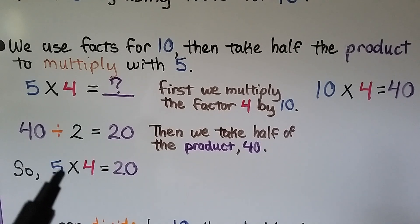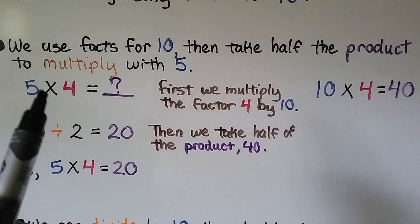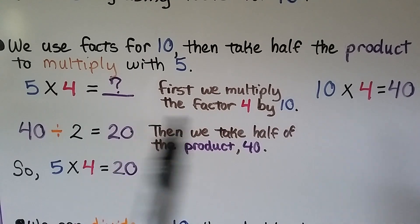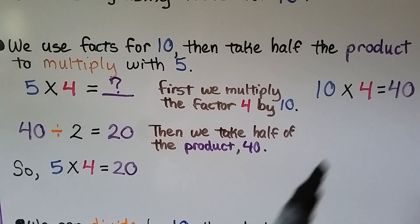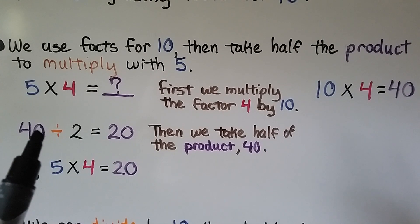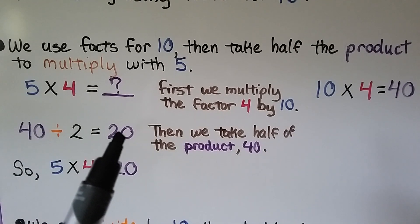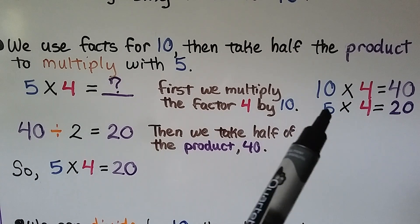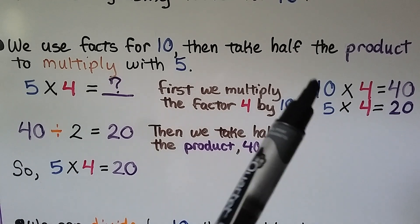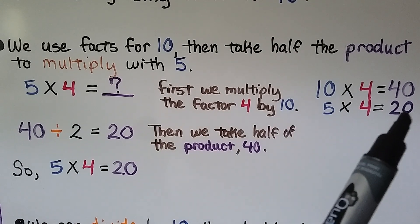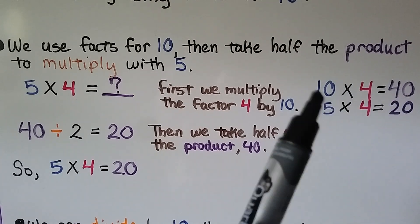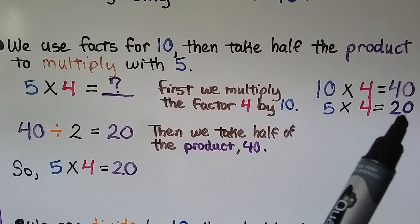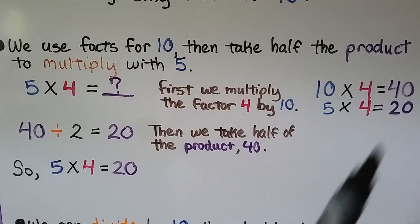So 5 times 4 is equal to 20. Because 5 is half of 10, we can use half of the product to find 5 times 4. Five is half of 10, and 20 is half of 40.